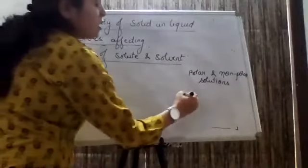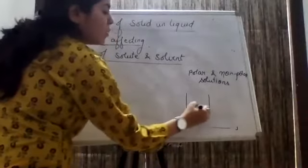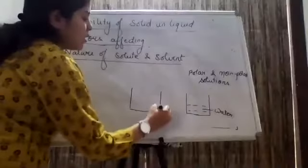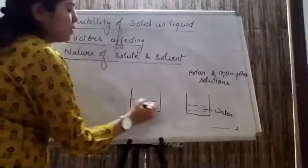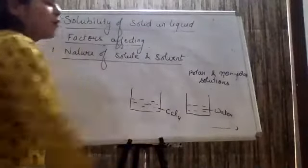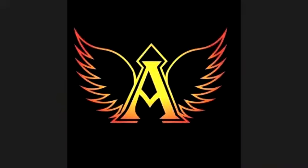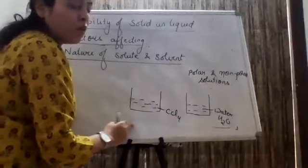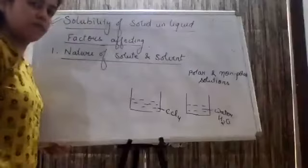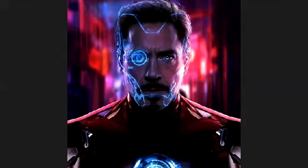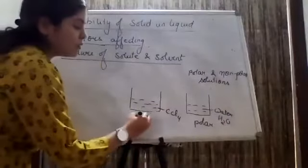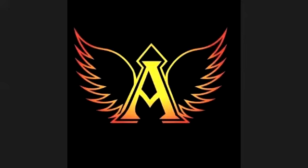I will give you quickly an example. Suppose you are having water and in another beaker you are having carbon tetrachloride CCl₄. So if I am talking about CCl₄ and H₂O — which is polar and which is non-polar? H₂O is polar, very good. And CCl₄ is non-polar.